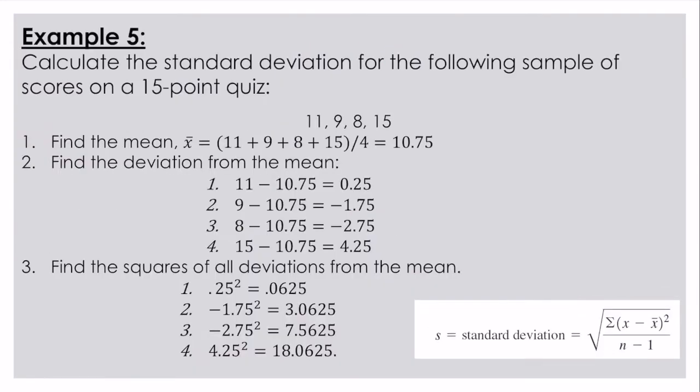Let's calculate the standard deviation for the following sample of scores on a 15-point quiz. So the first thing I did was I found the mean. I did that by taking the sum of all my data values divided by the total number of data values, which in this case were one, two, three, four. So I get a mean of 10.75. Typically 10.75 is perfect. I wouldn't go any more than two decimal points. It's just going to make your life really messy, so feel free to round.